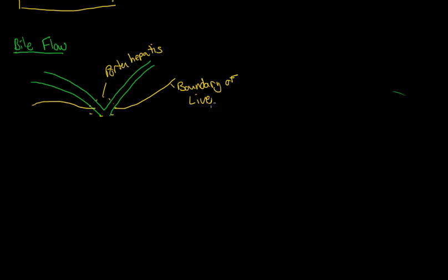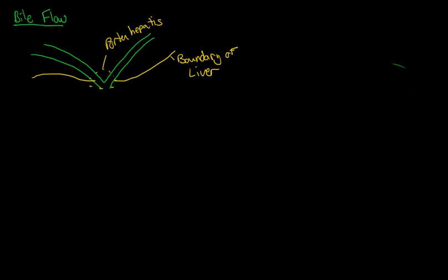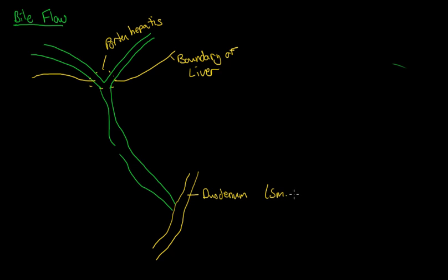We have those right and left hepatic ducts leaving the liver, and right about here we have the porta hepatis. You have the portal vein and artery there too at the boundary of the liver. Eventually this is going to run to the small intestine - the duodenum, which is part of the small intestine.